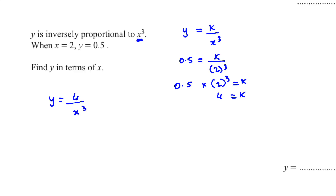If we have directly proportional, then we write y equals k multiplied by whatever it is proportional to.